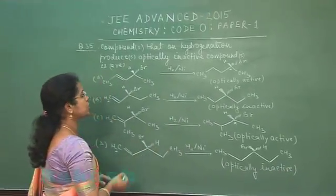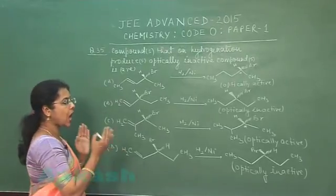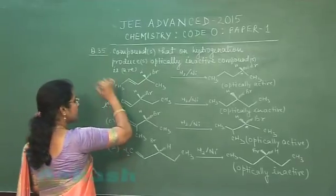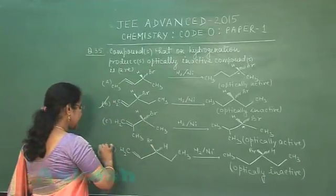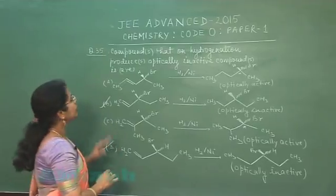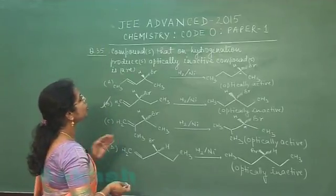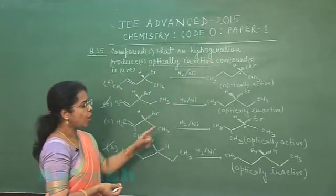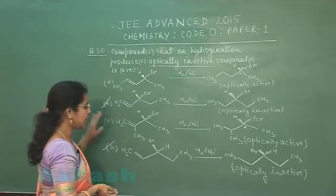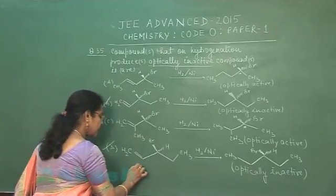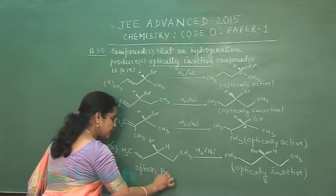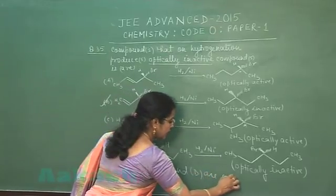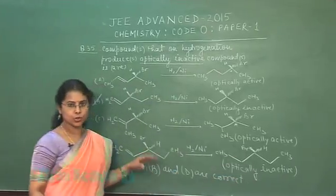In this question, two of the given compounds produce optically active products and two compounds give optically inactive products. We have to find the compound that on hydrogenation produces an optically inactive compound. So option B and option D are the correct options.